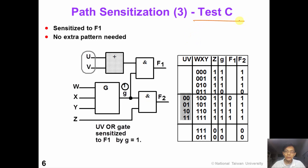Now we move on to test segment C, which has two inputs U and V. We can sensitize it to output F1 because this is an AND gate, so G must be one all the time. We do not need to add four patterns. Looking at our existing patterns, we find that G is one in several of them, so we can insert our four patterns into the existing eight patterns. When we observe output F1, we exhaustively test segment C without needing any extra patterns.